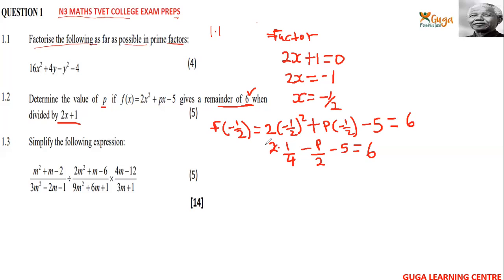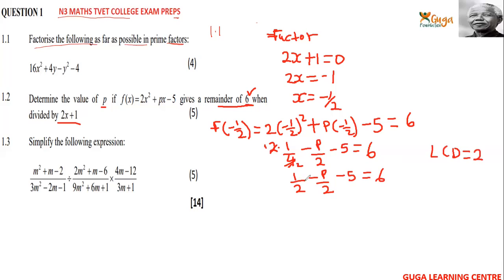Now 2 goes into ¼ to give ½, and we apply the LCD which is 2. Multiply every term by 2: this 2 and 2 cancel and we are left with terms simplified through the LCD.